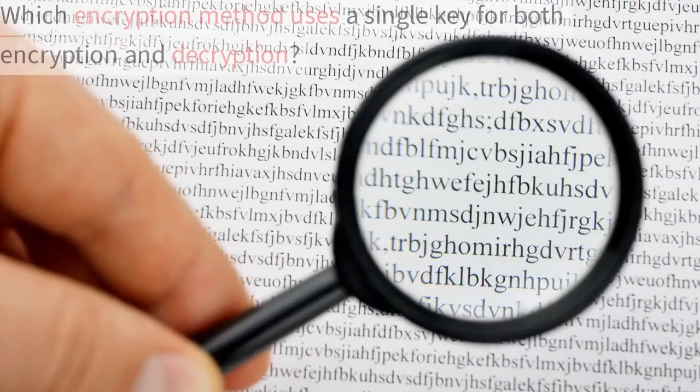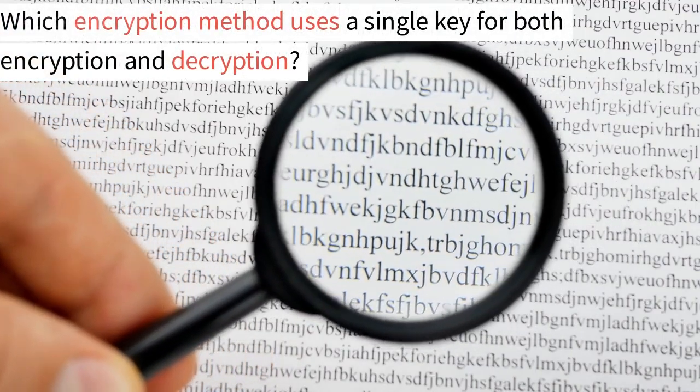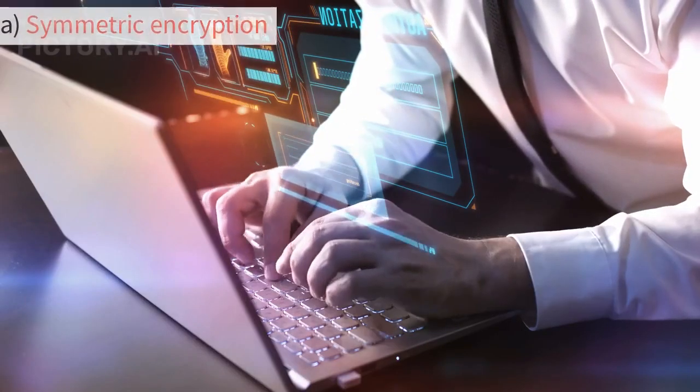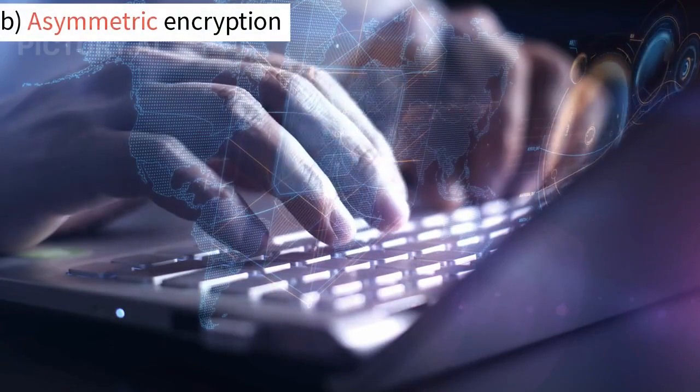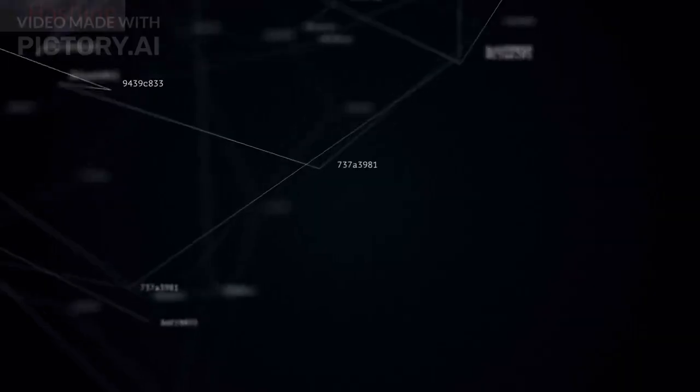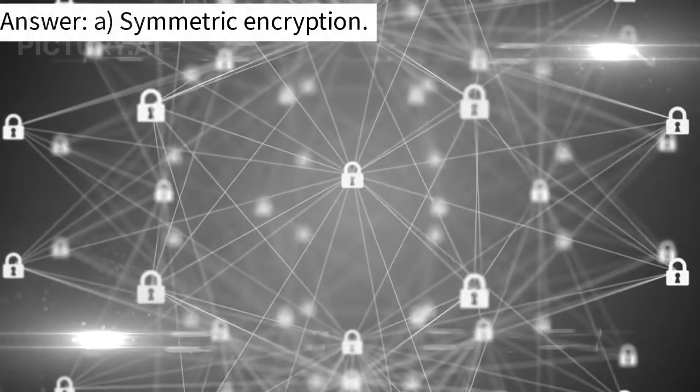Question 9. Which encryption method uses a single key for both encryption and decryption? A. Symmetric encryption. B. Asymmetric encryption. C. Public key encryption. D. Hashing. Answer: A.